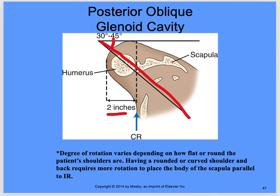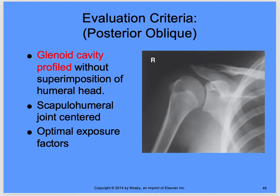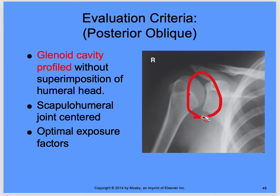For the patient to be obliqued, degrees of rotation vary depending on how flat or round the patient's shoulders are. A rounded or curved shoulder and back requires more rotation to place the scapula parallel to the IR. The thicker the patient, the more rotation — up to 45 degrees; the thinner the patient, less rotation — around 30 degrees. Evaluation criteria: glenoid cavity is profiled without superimposition of the humeral head. You want to see that nice open cavity, scapulohumeral joint centered, with optimal exposure factors.